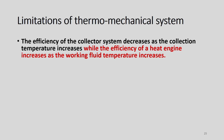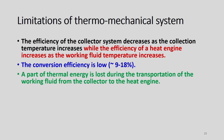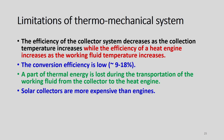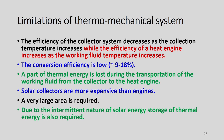The limitations of these thermomechanical systems include: collector efficiency decreases as collection temperature increases, while heat engine efficiency increases with working fluid temperature; overall conversion efficiency is low; part of thermal energy is lost during transportation of working fluid from collector to heat engine; solar collectors are more expensive than engines; a very large area is required; and due to the intermittent nature of solar energy, thermal energy storage is required, and storage materials degrade over time.